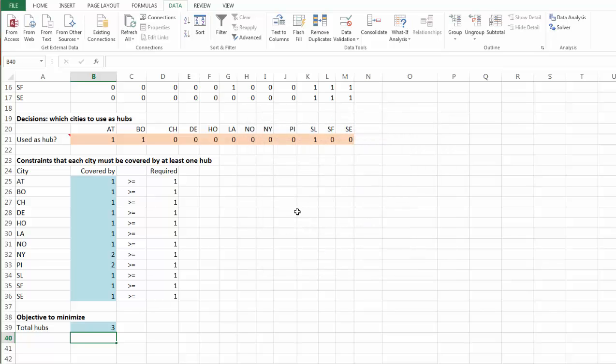In the end, this is what we've had. Out of the 12 cities, only three of them will be hub. They are Atlanta, Boston, and Salt Lake City.